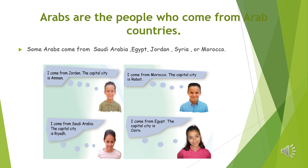Some Arabs come from Saudi Arabia, Egypt, Jordan, Syria, or Morocco. Look at the pictures given here. In the first picture, this boy comes from Jordan. In the second picture, this boy comes from Morocco. In the third picture, this girl comes from Saudi Arabia. In the fourth picture, this girl comes from Egypt. No matter what Arab country they're coming from, they are all Arabs.